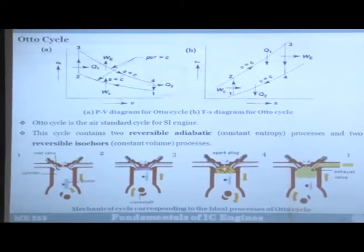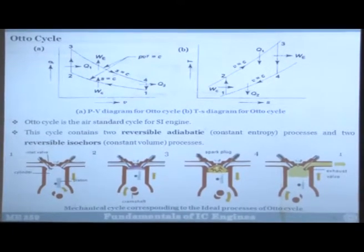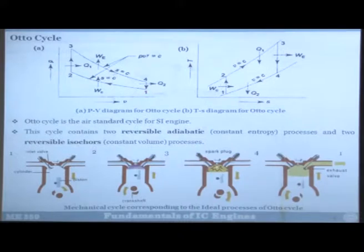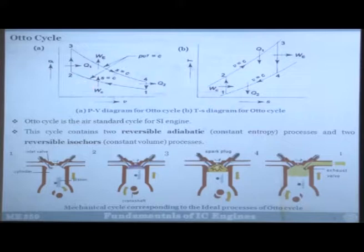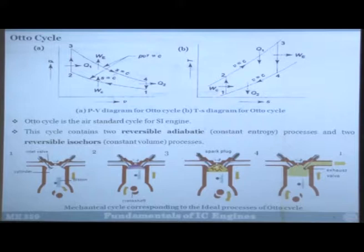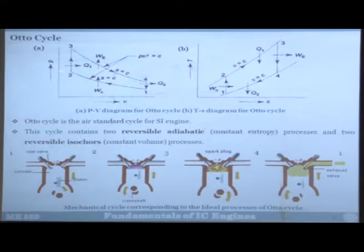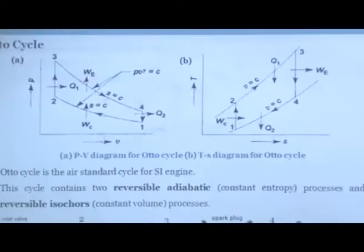Both P-V and T-S diagrams are shown. Process 1 to 2 is assumed to be isentropic compression — work is being done on the system. On the T-S diagram, this is isentropic so it is a straight line; entropy remains constant but temperature rises. On the P-V diagram, pressure increases but volume shrinks. The second process in the Otto cycle is constant volume heat addition from 2 to 3 — volume remains constant but pressure rises as heat is added.